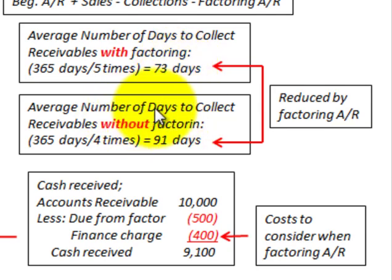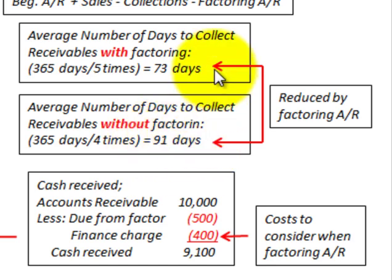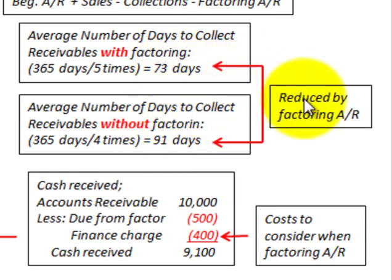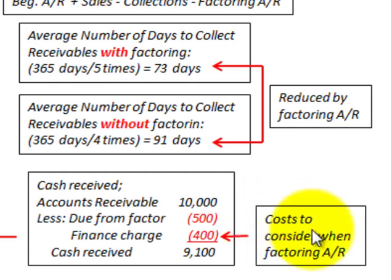Comparing to the average days without factoring — 365 divided by four times equals 91 days — we can see that factoring our accounts receivable reduced the average collection period from 91 days to 73 days. However, there are costs involved that we must weigh when deciding whether to factor accounts receivable.